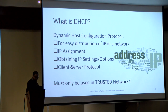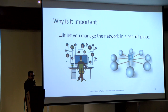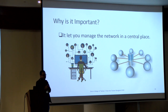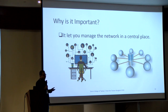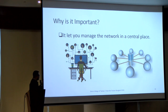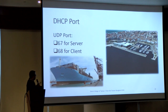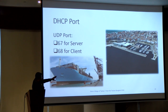So, why is DHCP important? It lets you manage the network in a central place. Who wants to manually configure static IP addresses to 100 or 1,000 devices? No one. So DHCP helps in the distribution of IP addresses. DHCP uses port 67 for the server and port 68 for the client.